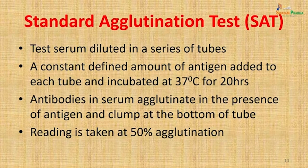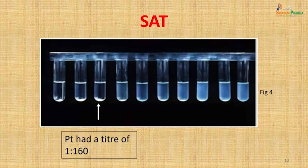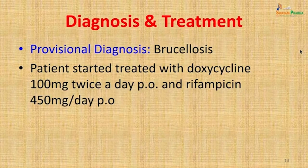The Standard Agglutination Test (SAT) was done. Test serum was diluted in a series of tubes, a constant defined amount of antigen was added to each tube and incubated at 37°C for 20 hours. Antibodies in the serum agglutinated in the presence of antigen and clumped at the bottom of the tube. The reading was taken at 50% agglutination. This patient had a titer of 1:160, and a provisional diagnosis of brucellosis was made.